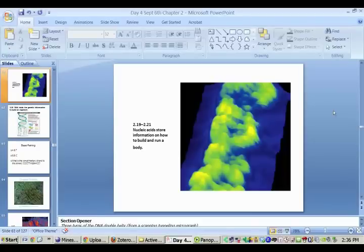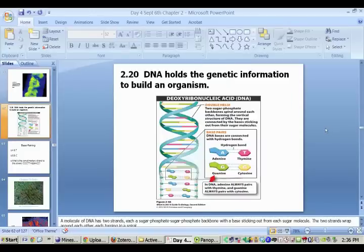Next we get into nucleic acids, which we'll really get into more in chapter five when we talk about DNA. But DNA is going to hold all the genetic information in order to build an organism. This is found in every single one of your cells—all of the instructions needed to make a complete you are found in every single one of these cells.